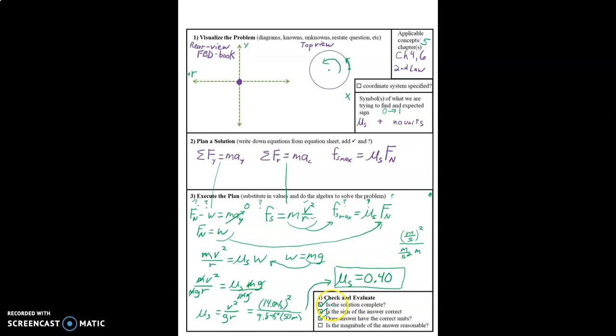Is the magnitude of the answer reasonable? Yes it is. 0.4 is a number between 0 and 1 which is what almost all coefficients of friction are. You can occasionally have one that's a little bit above one, but almost always between 0 and 1. All finished.